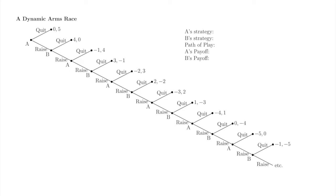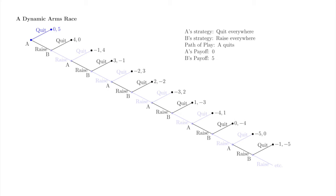Now we'll look at some strategy pairs, the induced paths of play, and corresponding payoffs. First, consider the strategy pair in which A quits at every move and B raises at every move. The branches corresponding to these strategies are marked in blue. The path of play is that A quits and the game ends. A receives payoff zero — A never raised on the path of play, so A's cost of raises is zero, and zero minus zero is zero. B receives payoff five — B receives the $5 prize because A quit on the path of play, and B never raised, so five minus zero is five.